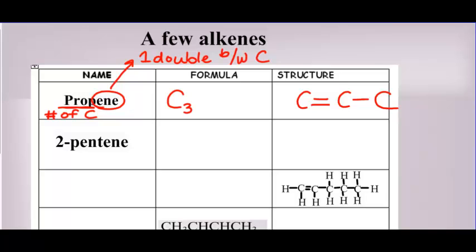Propene tells you you need a double bond between the carbons. To get how many hydrogens, you can either draw it or use the general formula. For an alkene, there's always twice as many H's as C's, so this would be H6. Carbon has to have four bonds around it. This first carbon only has two bonds, so it needs two more — attach H's there. The middle carbon has three bonds, so you only need one more H. The last carbon has one bond, so you need three H's there. And there is propene.